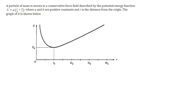A particle of mass m moves in a conservative force field described by the potential energy function U equal to a multiplied by the quantity r over b plus b over r, where a and b are positive constants and r is the distance from the origin. The graph of U is shown below. Questions related to this are what we're going to talk about in this episode of Physics is Easy with Mr. Jesse.